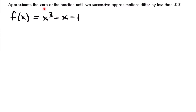Here's our example. We want to approximate the zero of the function until two successive approximations differ by less than 0.001. The word 'zero' here is the same thing as x-intercept — you might also see the word 'root.' Our function is f of x equals x cubed minus x minus 1. You can see how this would normally be a difficult function to find the root of, since it isn't going to easily be factorable.